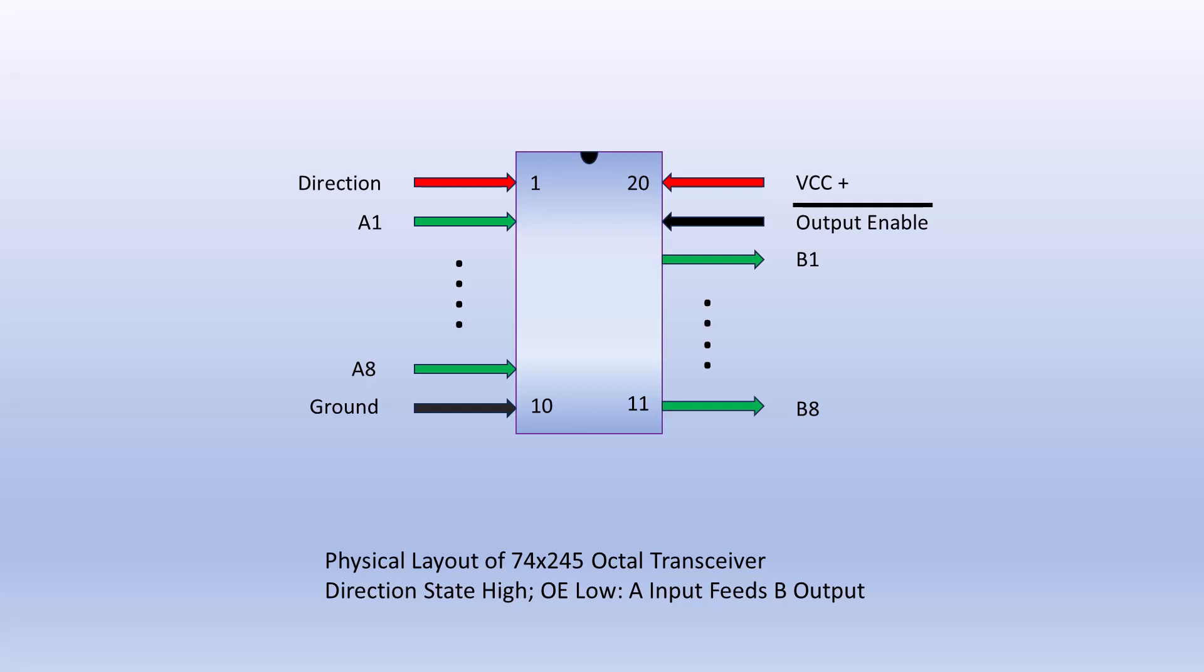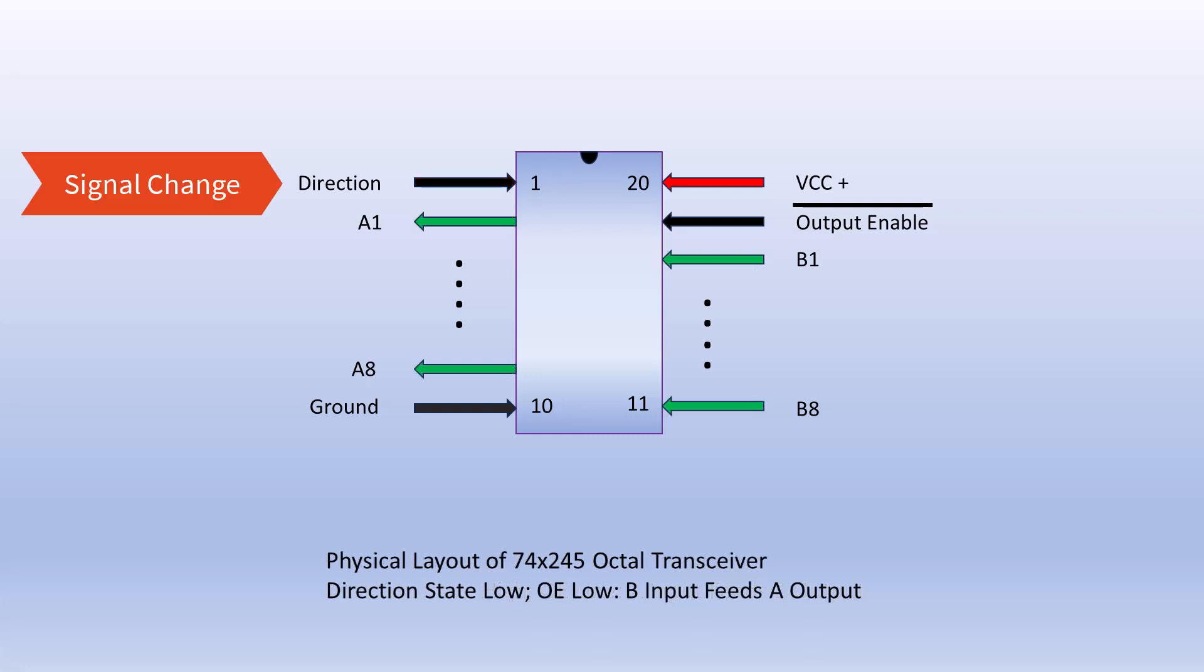Here we see that if the direction input is high and output enable is low or in an enabled state, signal will pass from the A to B pins. Next we see if the direction input goes low and output is enabled, the signal flips and will pass from the B to the A pins.